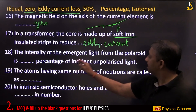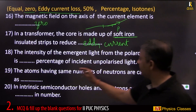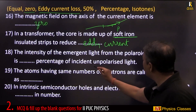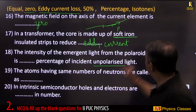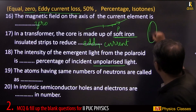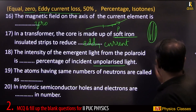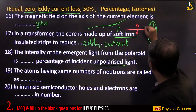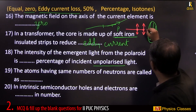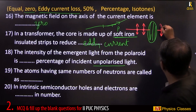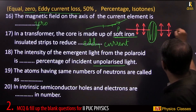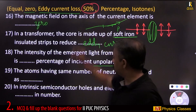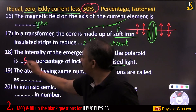The intensity of emergent light from a polaroid is 50% of the incident unpolarized light. When unpolarized light passes through a polaroid, it emerges as plane polarized light with half the intensity cut off, so the answer is 50%.